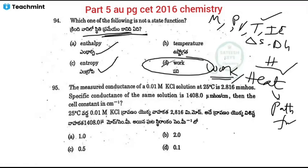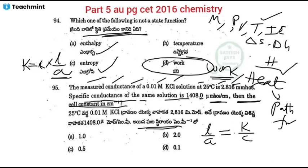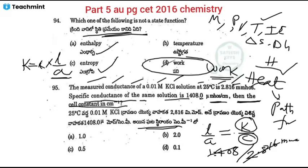Next: measured conductance of 0.01 mol KCl solution at 25°C is 2.1 millimohs; specific conductance is 1408.2 μS/cm. Cell constant = K/C = specific conductance / conductance. Cell constant = 1.408 / 2.186 ≈ 0.5 cm⁻¹. So 0.5 is the correct answer; remaining options are wrong.